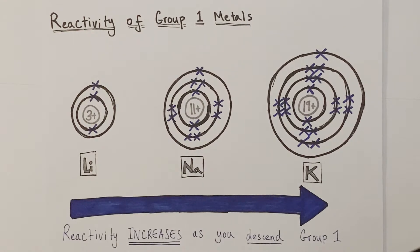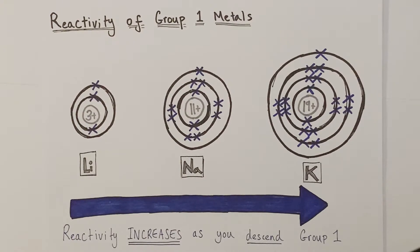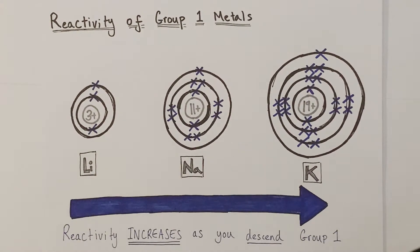You can see we're descending group 1 here, and the key trend in terms of group 1 and their reactivity is that reactivity of the group 1 metals increases as you descend the group. I want to explain the factors that influence this.